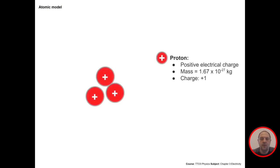If you zoom in on those molecules you will find atoms, which are even smaller. And if you start zooming in on those atoms you will find very, very small particles. To start with, we have the protons, and there are a few properties of protons that you should remember.